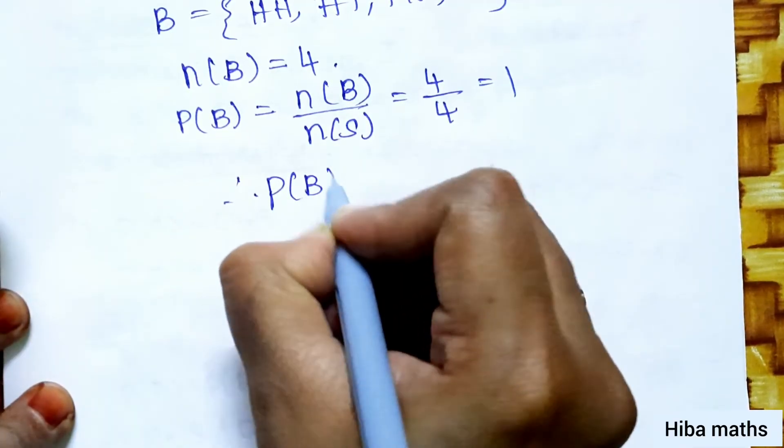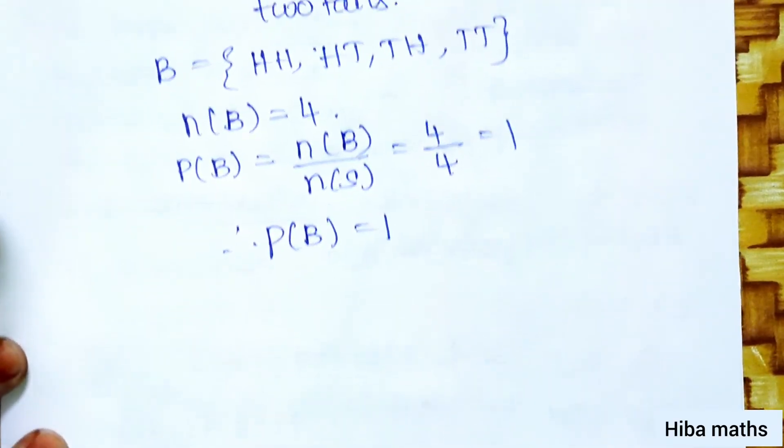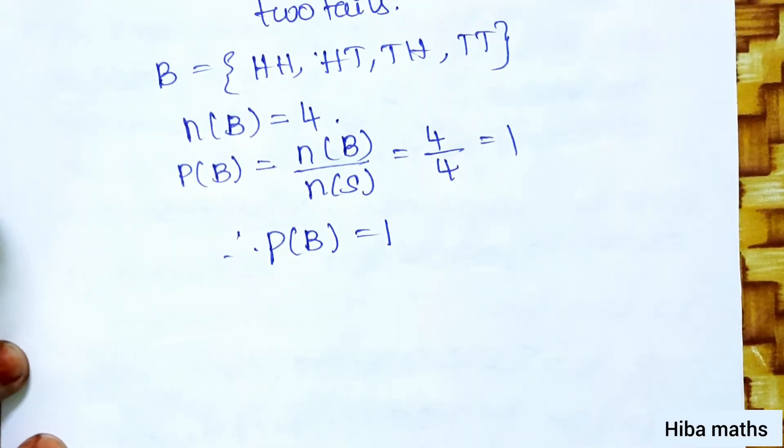Therefore, the probability of event B is 1. These sums are very easy and simple. Thank you so much for watching.